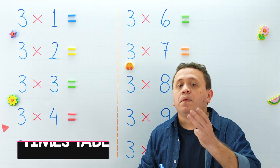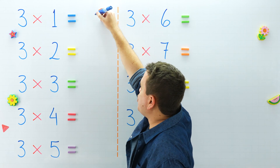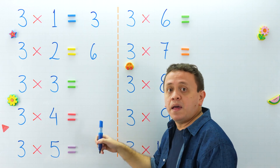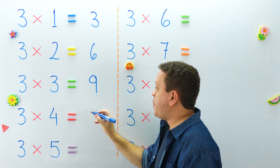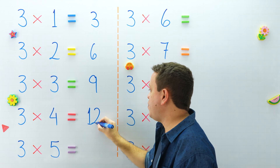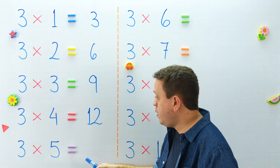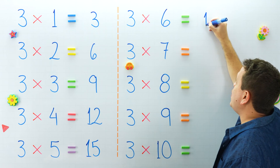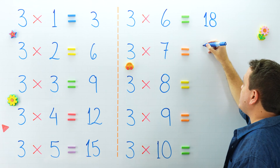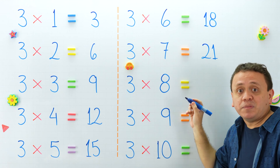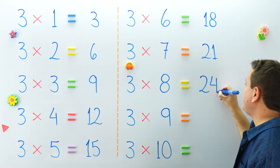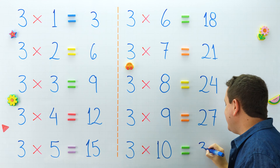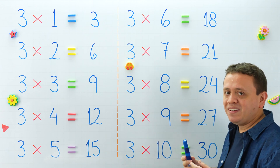We're done with this table, and now the 3 times table. Let's start with 3 times 1 — 3 times 1 equals 3, and 3 times 2 equals 6. 3 times 3 equals 9, and 3 times 4 equals 12. What about 3 times 5? Well, 3 times 5 is equal to 15. Over here, 3 times 6 equals 18. That's right. 3 times 7 equals 21, and 3 times 8 equals 24. 3 times 9 equals 27. The last one, 3 times 10 equals 30. That's right.